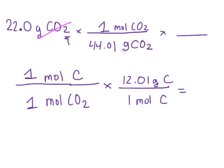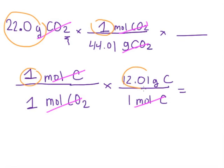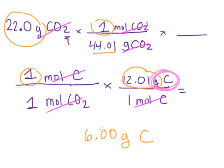Grams of CO2 cancels out, one mole of CO2 cancels out, and mole of carbon cancels out. What you're left with is multiplying 22 grams times 1 times 12.01 grams, then dividing by 44.01. When you multiply all this together, you end up with 6.00 grams of carbon. So in 22.0 grams of CO2 that were produced, 6.0 grams were just carbon. The remaining 16 grams were oxygen.